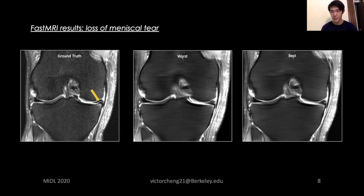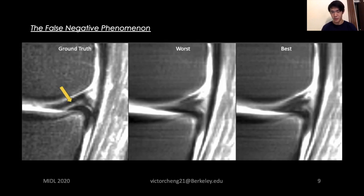However, qualitative observations showed that all these methods have failed in reconstructing some relatively small features. The finding is concerning because these features are usually abnormalities such as meniscal tears and subchondral osteophytes, which are not rare signs of injuries in real life. So we refer to this lack of feature reconstruction as the false negative phenomenon.